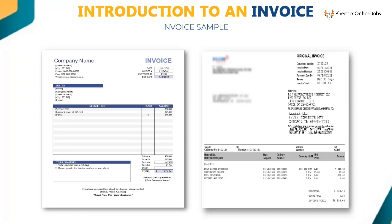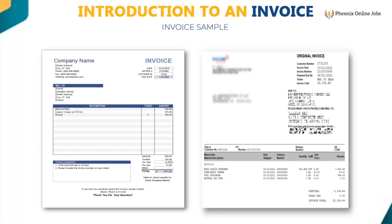The billing address of an invoice can be found below the supplier name and address. Item purchase details with item number, description, quantity, rate, and amount can be found just below the billing address. Net amount, tax amount, and total amount can be found below the line item particulars.